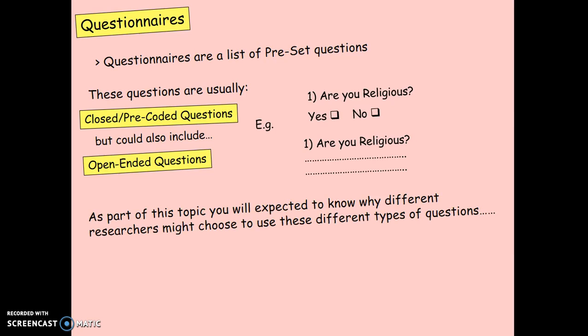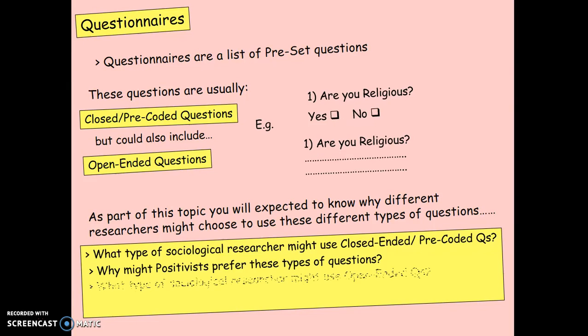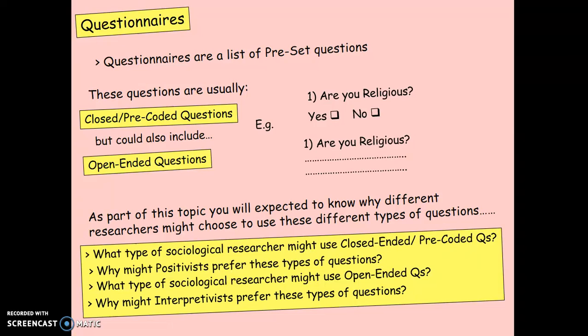As part of this topic you will be expected to know why different researchers might choose to use these different types of questions. What type of sociological researcher might use closed-ended or pre-coded questions? Why might positivists prefer these types of questions? What type of sociological researcher might use open-ended questions? Why might interpretivists prefer these types of questions?